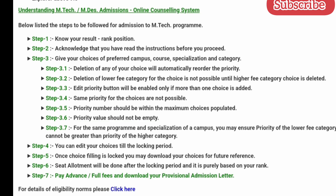After knowing your results, acknowledge that you have read all the instructions before you proceed. Give your choice of preferred campus, course, specialization, and category. Deletion of any choice will automatically reorder the priority. Deletion of a lower fee category choice is not possible until the higher fee category choice is deleted. The edit priority button will be enabled only if more than one choice is added.